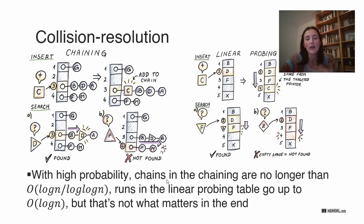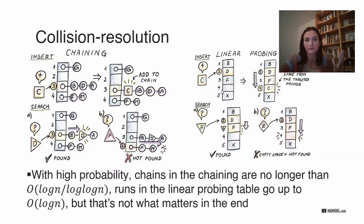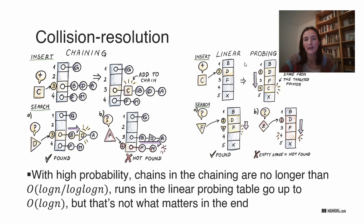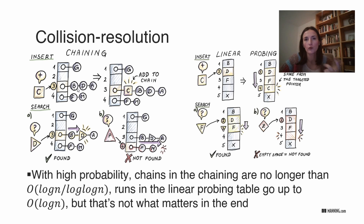There's research on what's faster and what works better. With high probability, chains in the chaining table have worst-case length no longer than log N over log log N — a little bit less than logarithmic. Whereas the consecutive runs in linear probing are of logarithmic length — a little bit longer. This length defines how long your search and delete operations are going to be. Linear probing has longer runs because items from different buckets can participate in the same run, whereas in chaining only items from one bucket belong to one linked list.